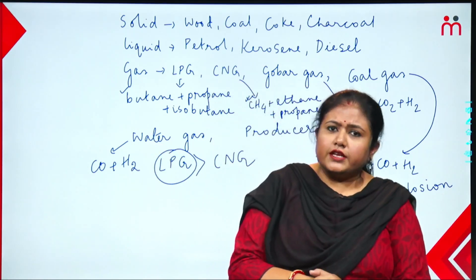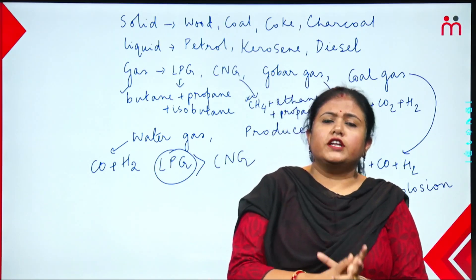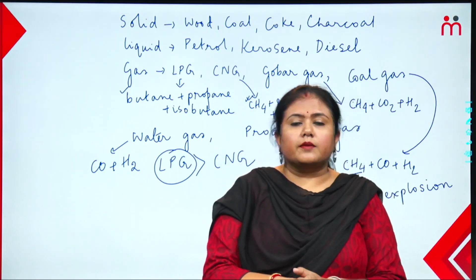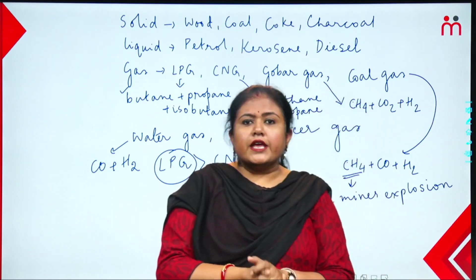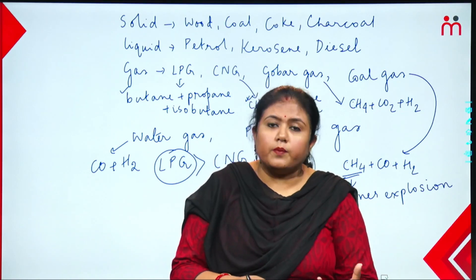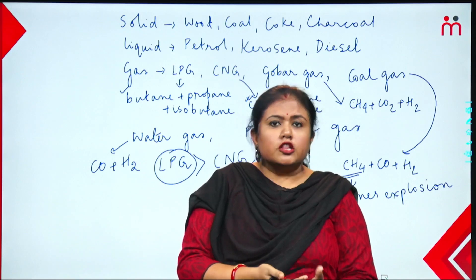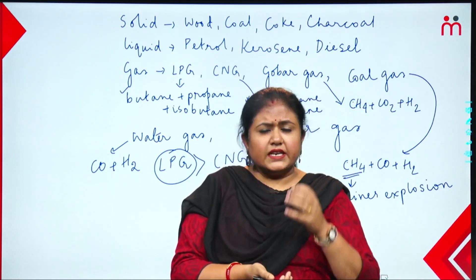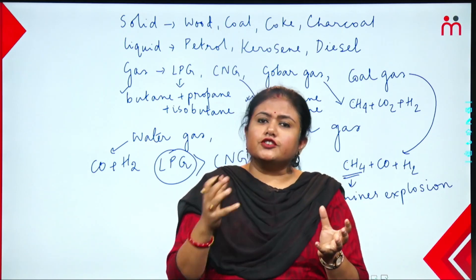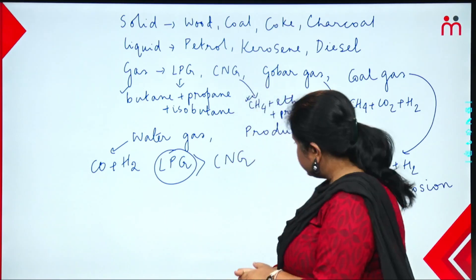Water gas — its main components are carbon monoxide and hydrogen — a mixture of carbon monoxide and hydrogen. Water gas is named 'water gas' because water is used in its production. When steam (water vapor) is passed over red hot coke, water gas is produced. Steam is passed over red hot coke and the resulting gas is called water gas.